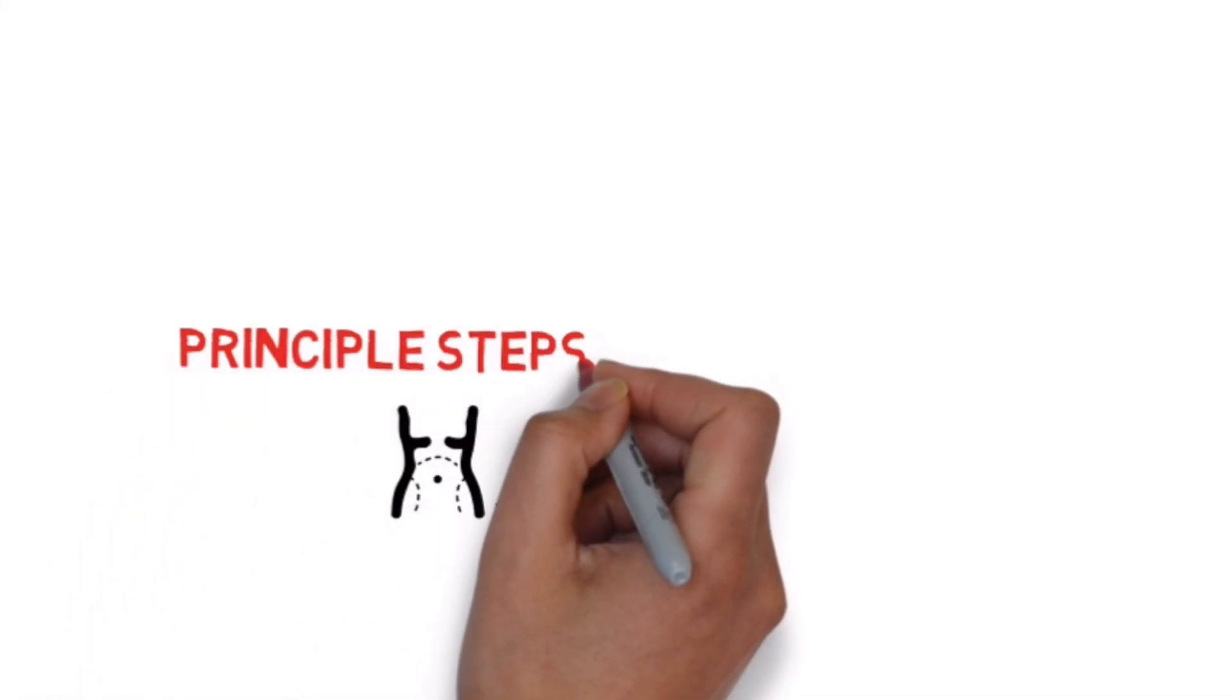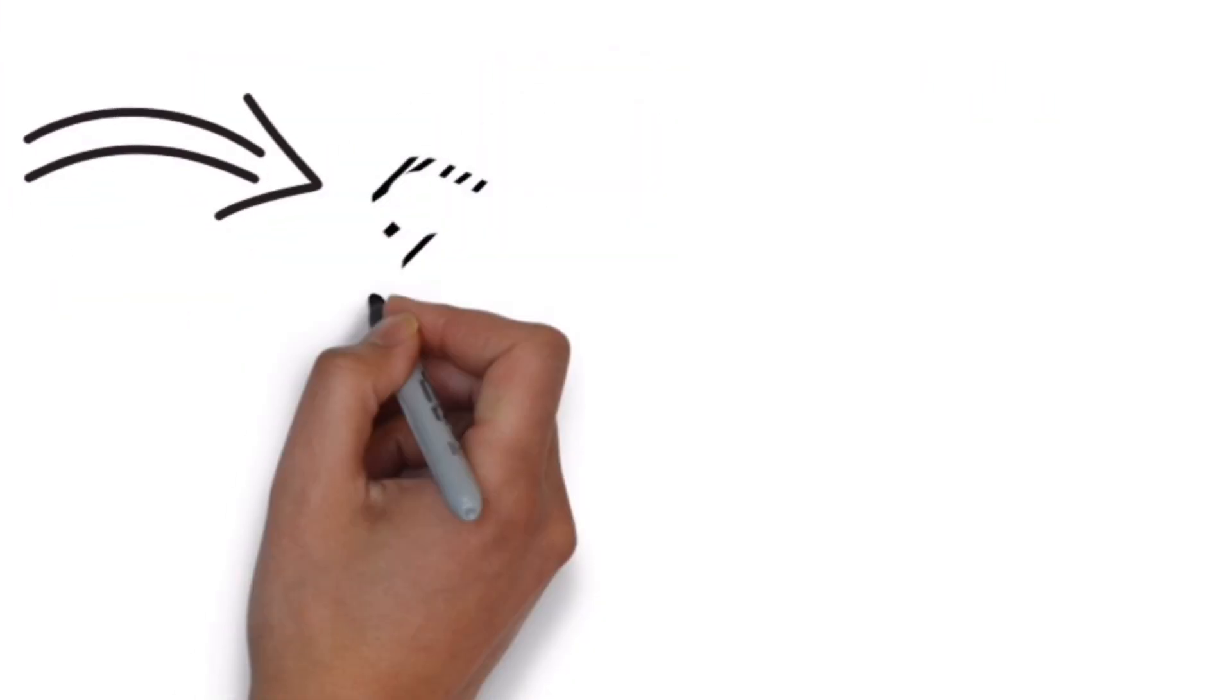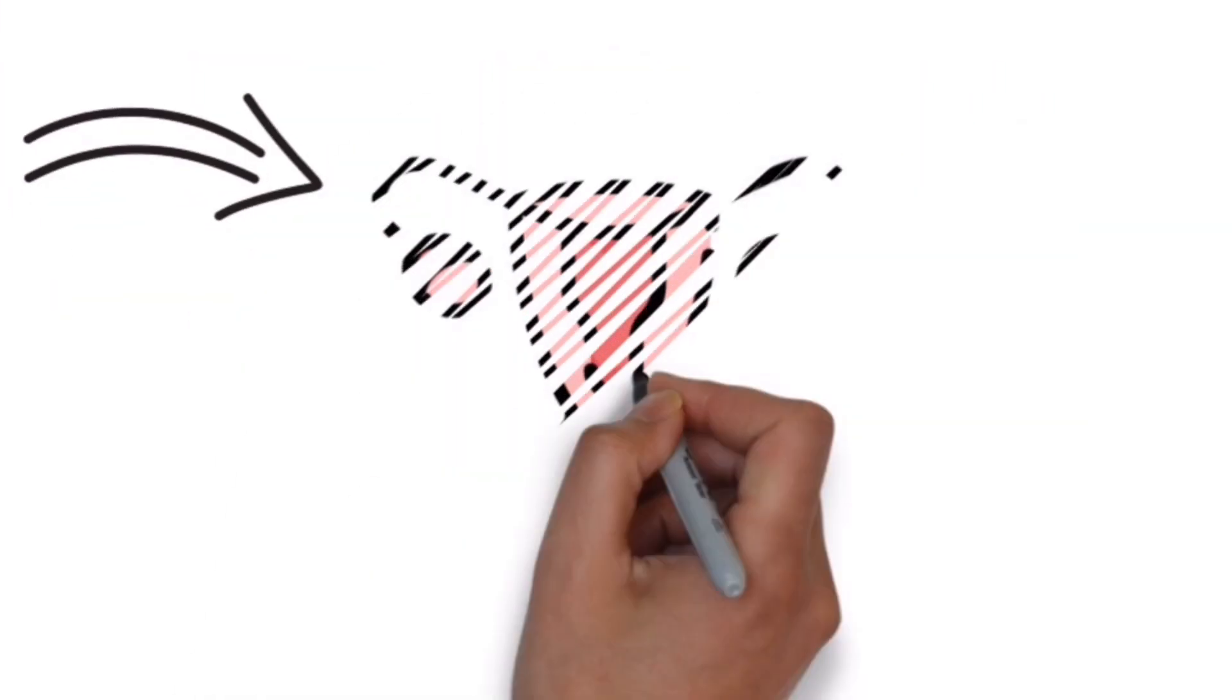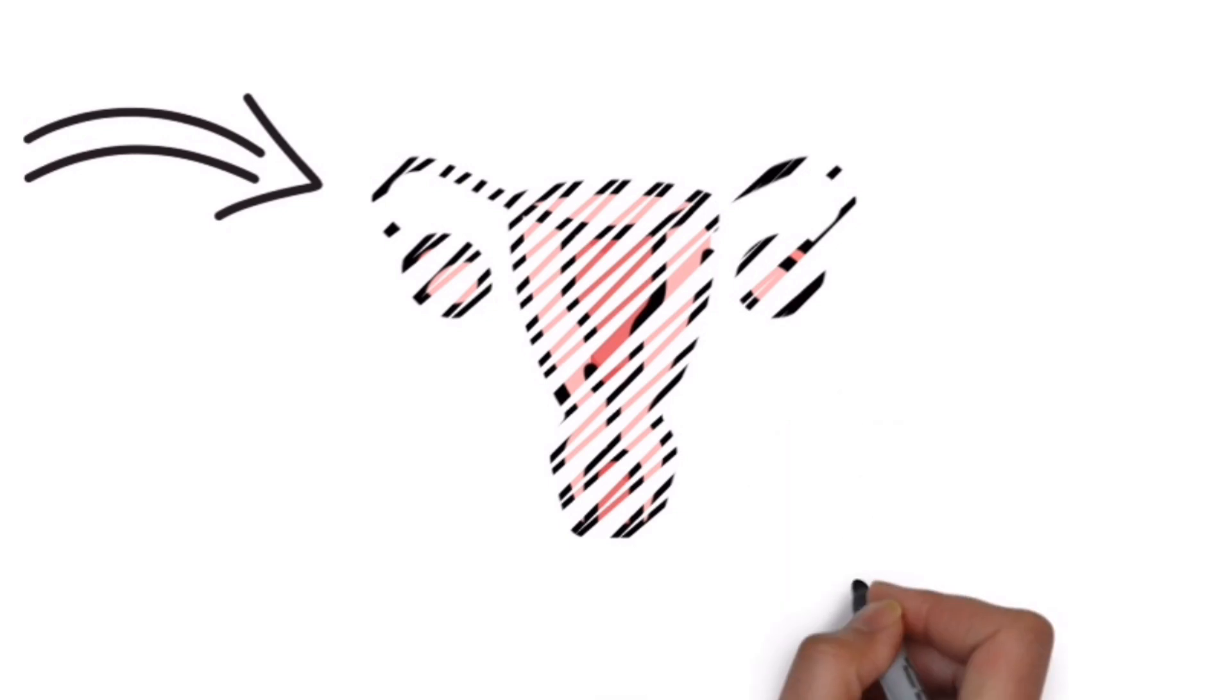Abdomen is opened either by a low transverse or intra-umbilical paramedian or midline incision. The uterus is drawn out of the wound. Doin's retractor is placed in position.